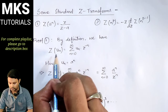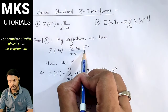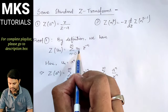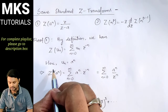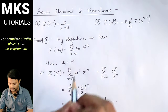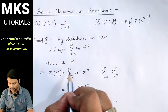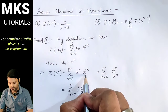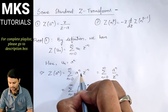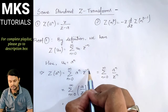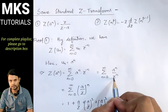By definition, Z-transform of u(n) is equal to summation n equal to 0 to infinity of u(n) into z to the power minus n. Comparing this, we take u(n) equal to a to the power n. So, Z-transform of a^n equals summation n equal to 0 to infinity of a to the power n into z to the power minus n, which equals summation n equal to 0 to infinity of a to the power n upon z to the power n.